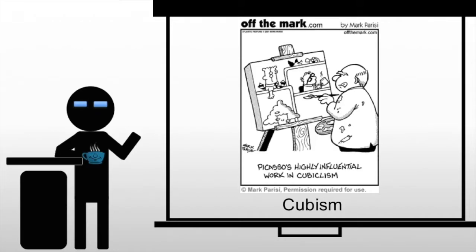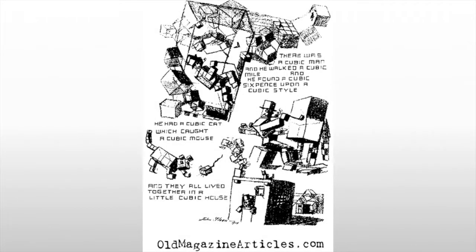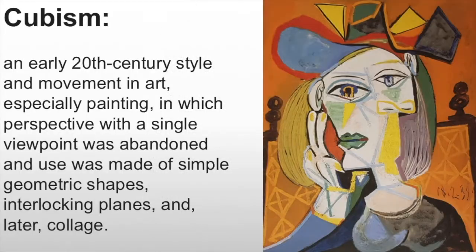Let's talk about cubism, one of the most difficult to define art movements, but we're going to try anyway. Cubism was one of the most influential visual art styles of the early 20th century. It was created by Pablo Picasso and Georges Braque in Paris between about 1907 and 1914.